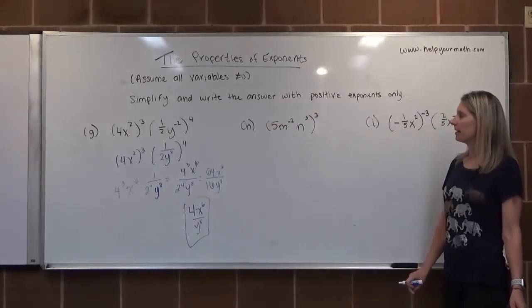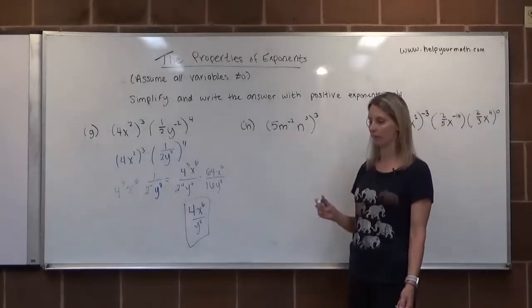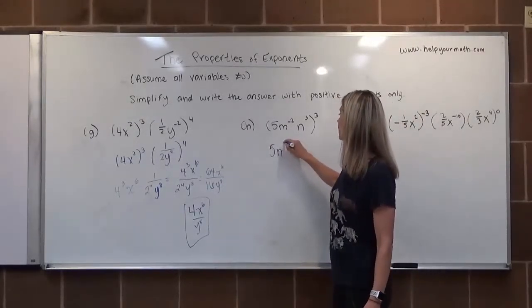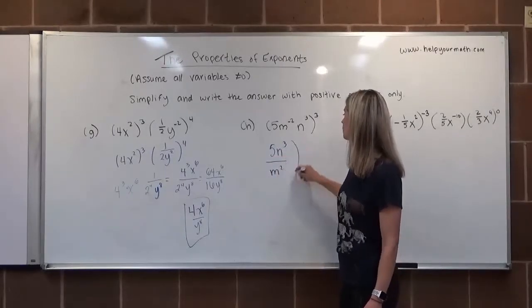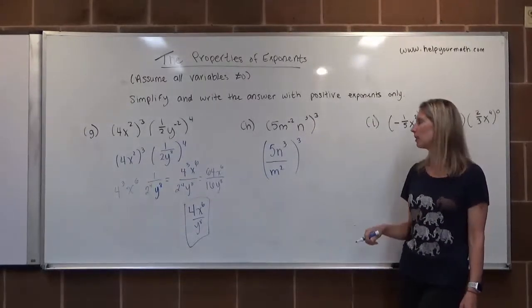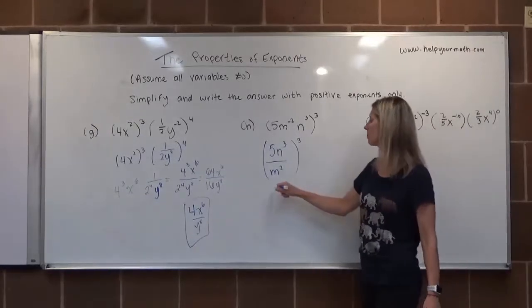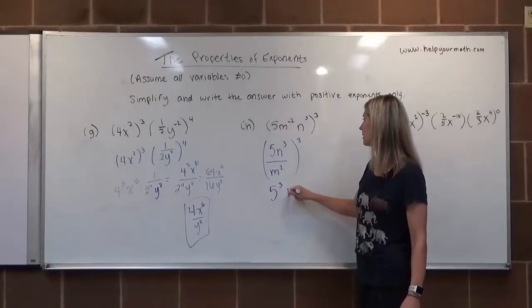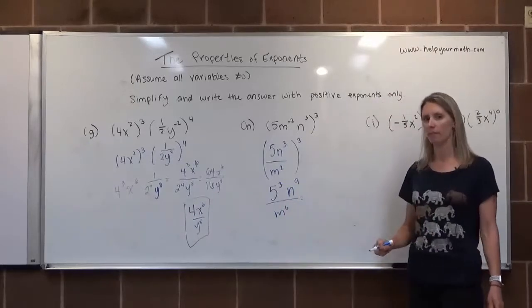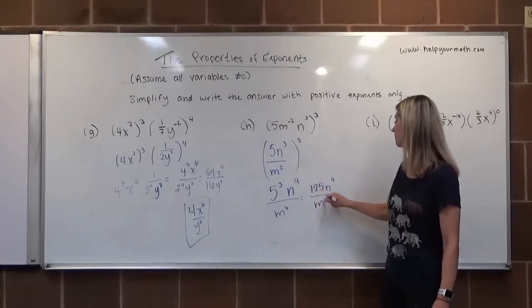For letter H, we have 5m to the negative 2 n cubed, all cubed. First, get rid of the negative exponent — m to the negative 2 belongs in the denominator. So we rewrite as 5n cubed over m squared, all cubed. Now distribute the exponent of 3, not forgetting numbers are factors: 5 cubed times n to the 9th over m to the 6th. Cleaning up: 5 cubed is 125, giving 125n to the 9th over m to the 6th.